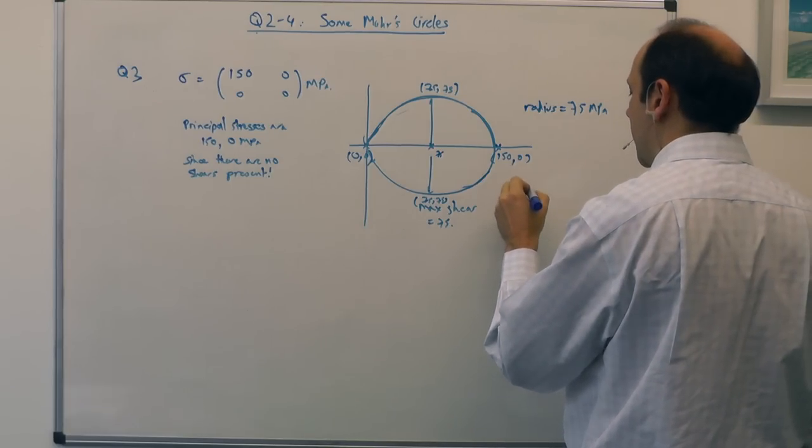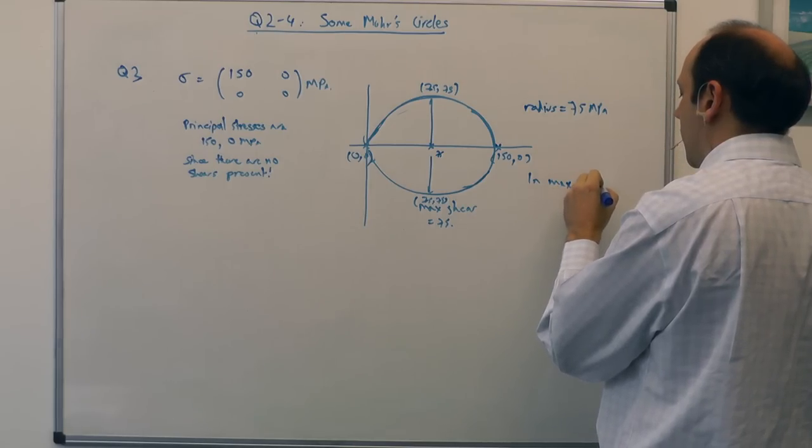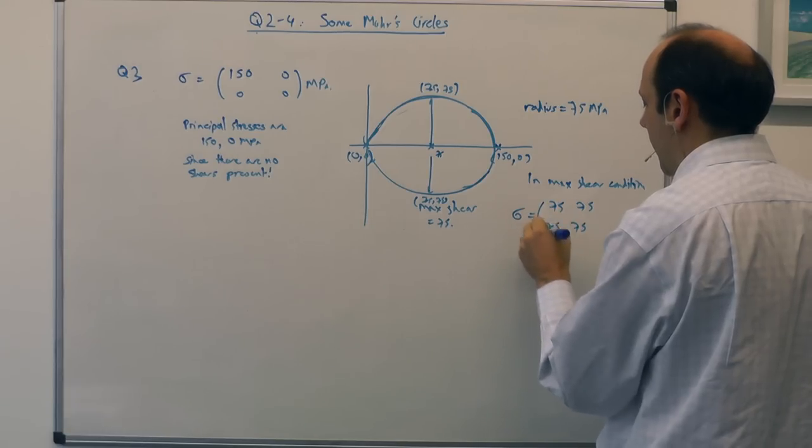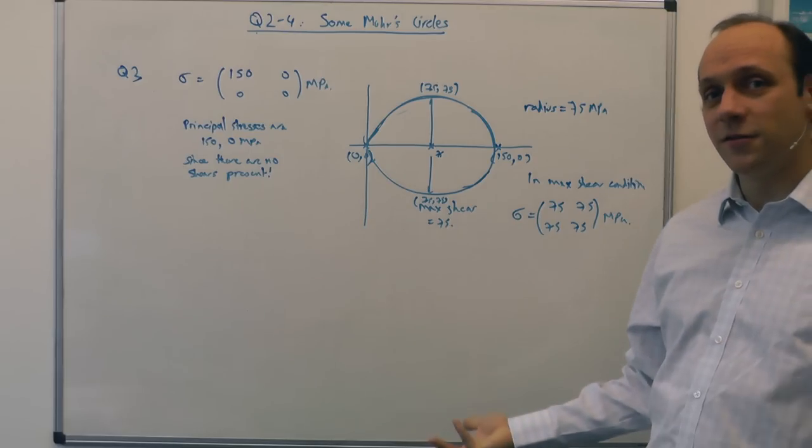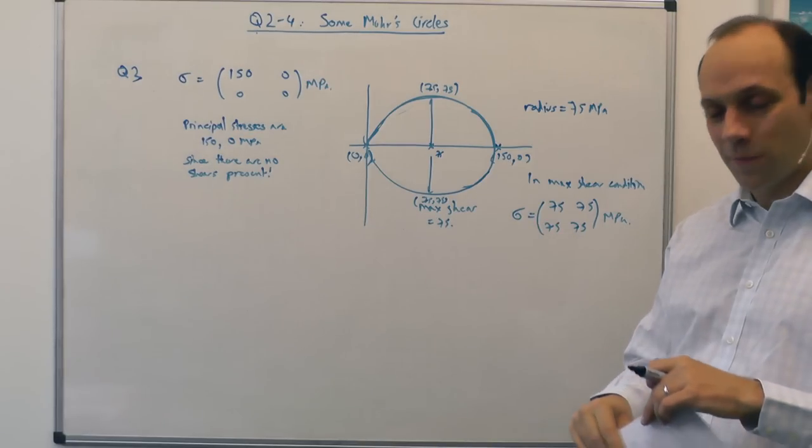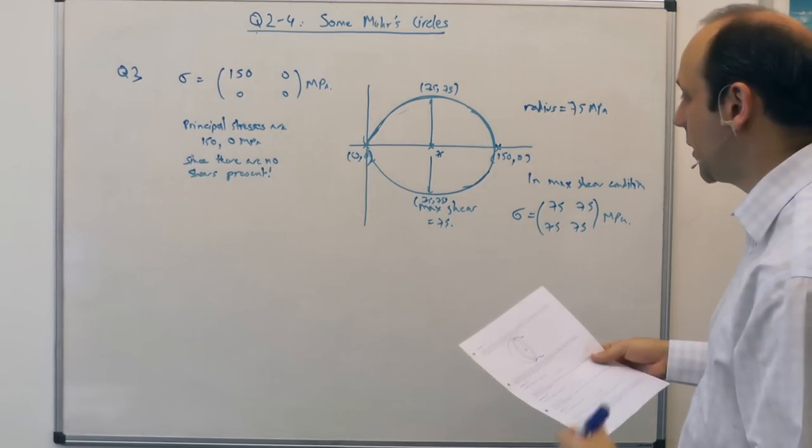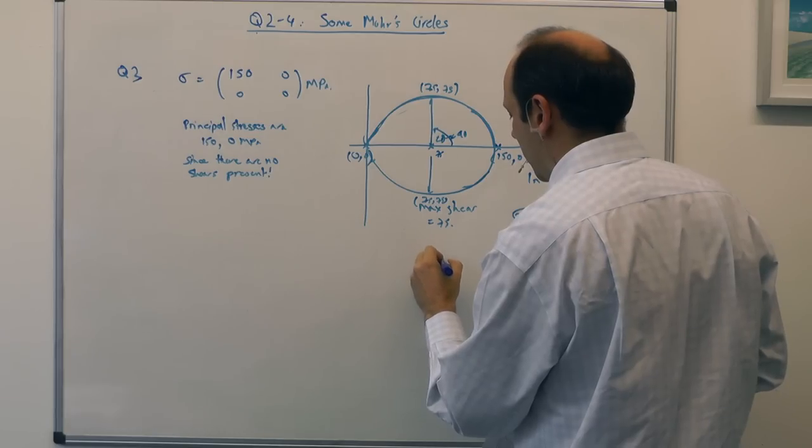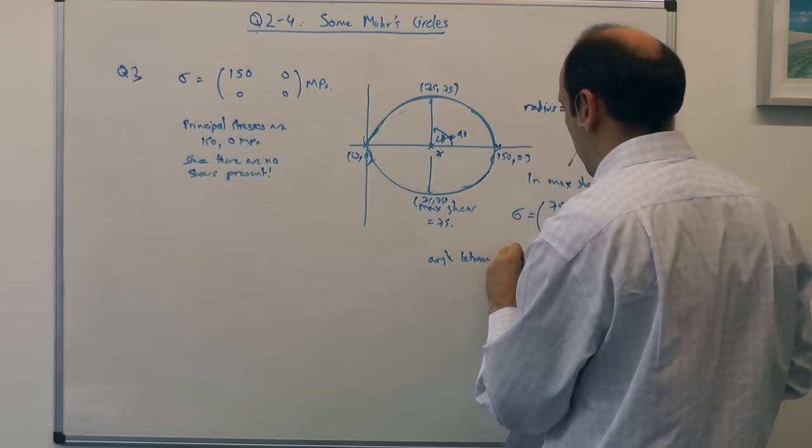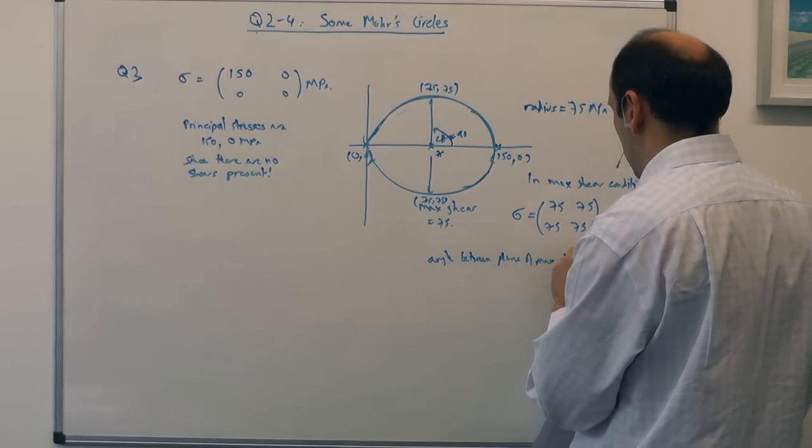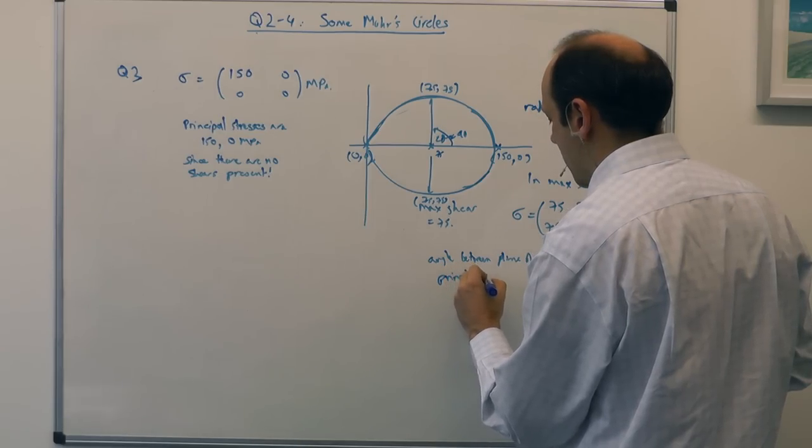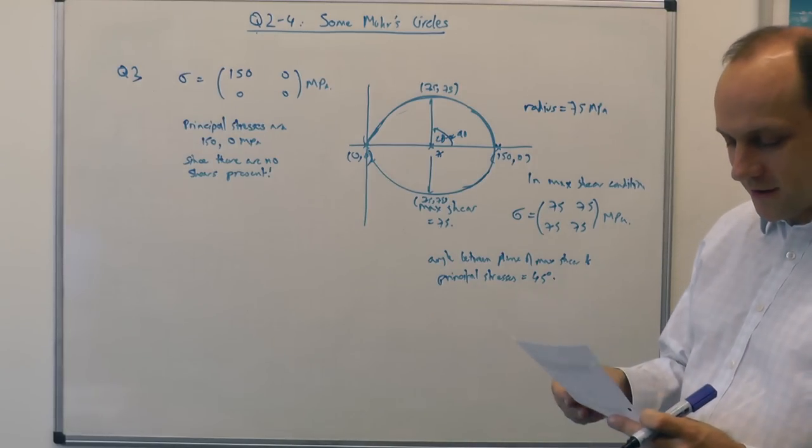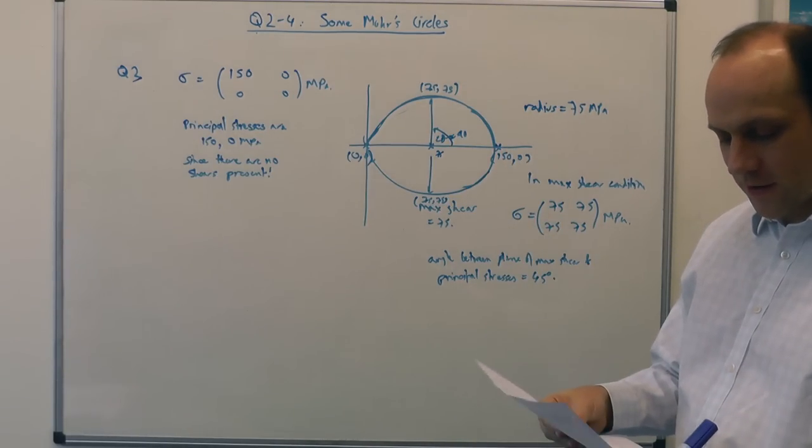So then, in the max shear stress, in max shear condition, the stress matrix is 75, 75, 75 MPa. And notice in the max shear condition, the two normal stresses are always equal to each other. It's, again, a necessary consequence of the way Mohr's circle works. And the angle between the plane of maximum shear and the principal stresses is, again, 45 degrees. Because it's here, 2θ is 90 degrees. So the angle between the plane of max shear and the principal stresses is 45 degrees. It's 90 degrees in Mohr's circle. Mohr's circle is in 2θ. So, again, it's a necessary consequence of the way Mohr's circle works. So that's question 3.